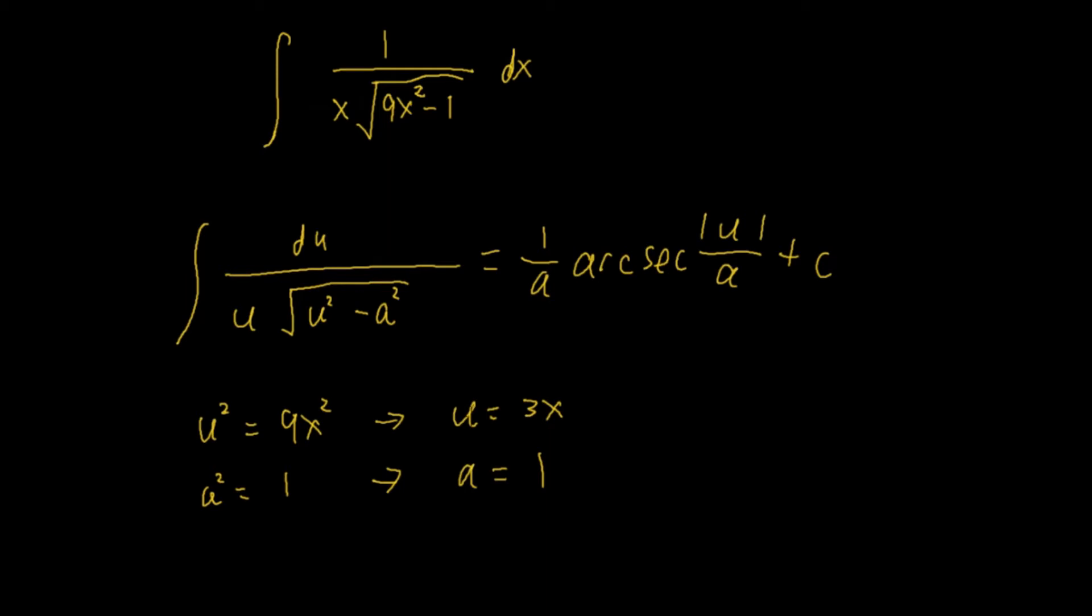Now, another thing is, we say u is equal to 3x here. But, over here, in our general integral, this is only x. So, how can we represent this x? We can also say that x is equal to u over 3. We divide both sides by 3. And, 1 over 3 is just a constant. We can always bring it out of the integral if we need to.